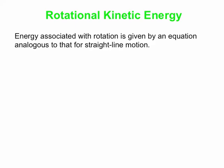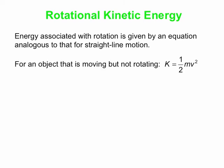So rotational kinetic energy — what is it? If you think about what kinetic energy is, it's energy associated with motion. And so rotational kinetic energy is energy associated with rotational motion. We're going to write down an equation for it, which is just analogous to our one-half mv squared equation that we use for straight line motion. So here we have our familiar equation for kinetic energy, one-half mv squared, and that applies to something moving in linear, or straight line, motion.